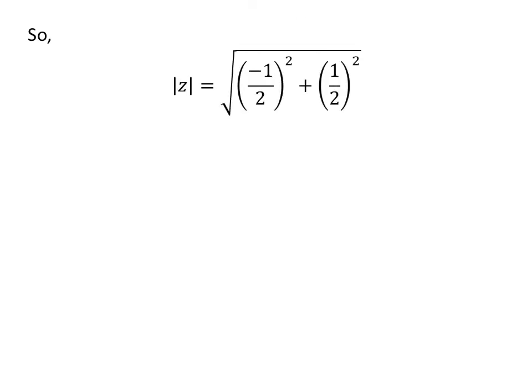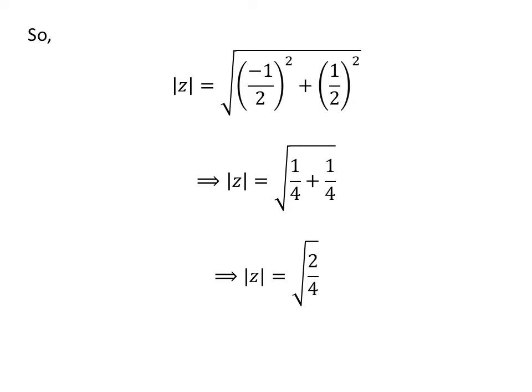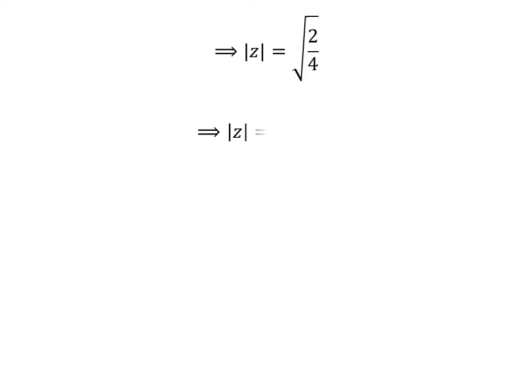As per the definition, modulus of z is equal to the square root of the square of minus half plus the square of half. So, modulus of z is equal to the square root of 1 upon 4 plus 1 upon 4. Further simplification implies modulus of z is equal to the square root of 2 upon 4, which gives modulus of z equal to 1 upon square root of 2. This equals r.